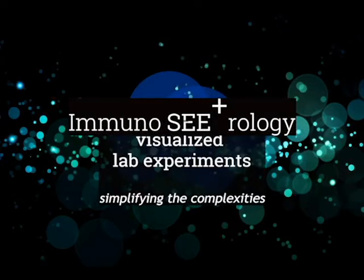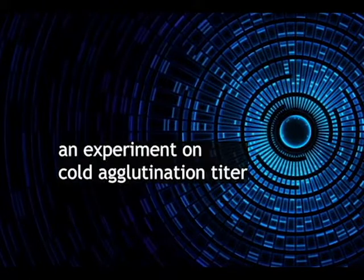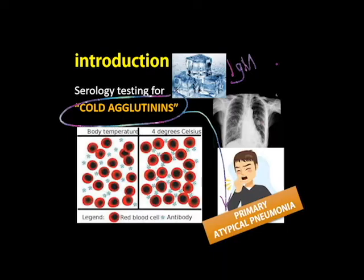Immunoserology Visualized Lab Experiments presents an experiment on Cold Agglutination Titer. This is an introduction to Cold Agglutination Titer. Serology testing for cold agglutinins is commonly requested in suspected cases of primary atypical pneumonia, where this rapid screening test has proven useful.